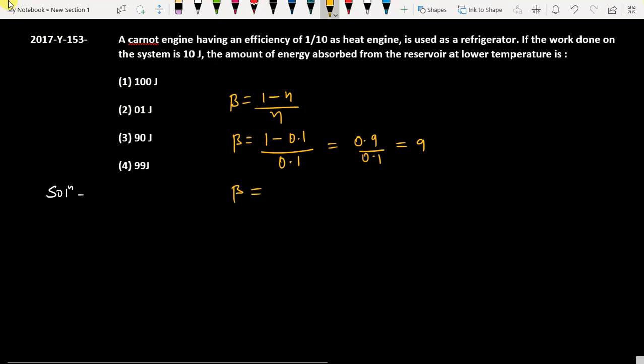We have to find out the amount of energy absorbed from the reservoir at the lower temperature. We know that beta is the amount of energy absorbed, that is q2, by work done. The work done on the system is given to us as 10 joule.